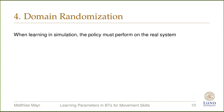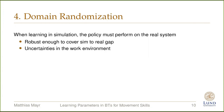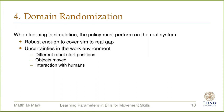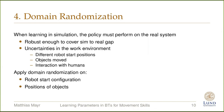Eventually, the policy must perform on the real system. Domain randomization is used to bridge the reality gap between the digital twin and the physical robot. The idea is to introduce enough variability into the simulation such that the real physical robot may appear as just another variation of the simulation. Furthermore, uncertainties in the work environment such as different start configurations, relocated objects, and interactions with humans can be incorporated when learning. In this work, we apply domain randomization on the start configuration of the robot as well as on the position of objects in the environment.